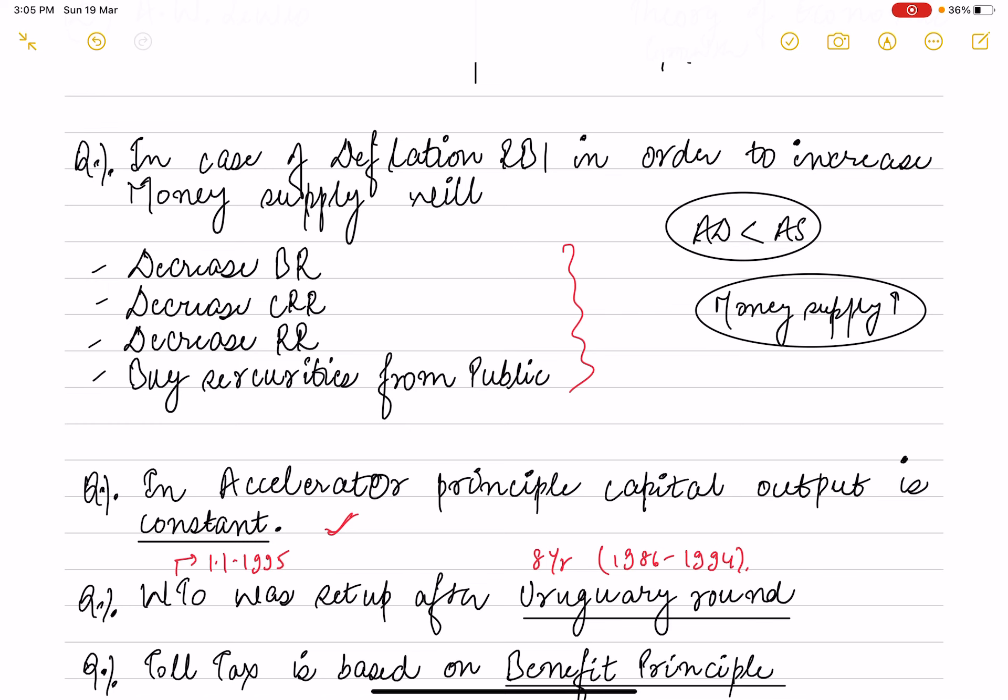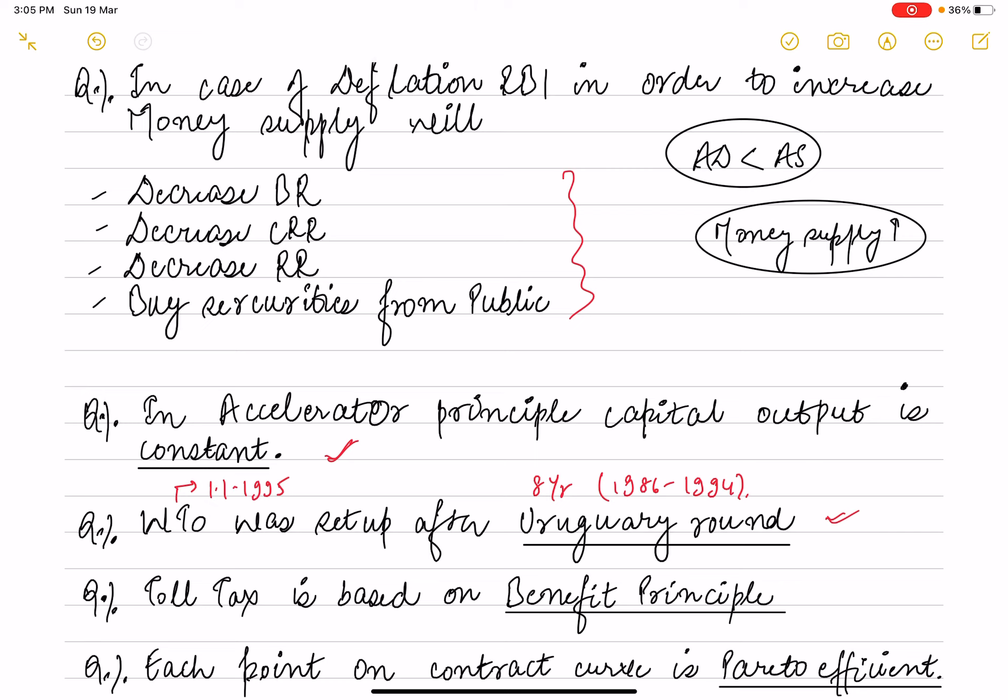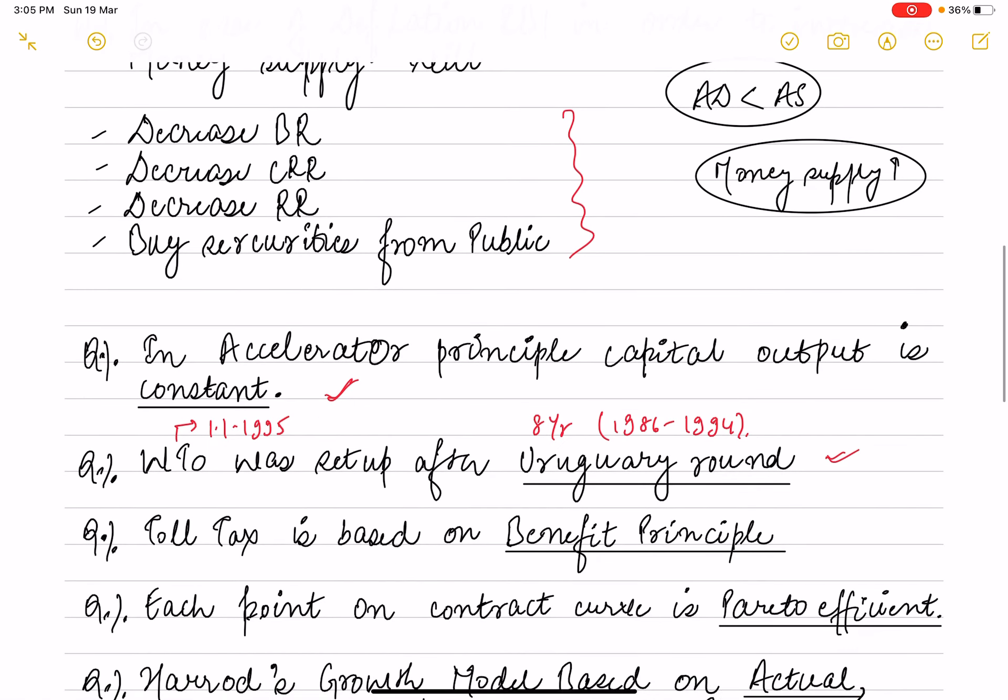Next is toll tax. Toll tax is based on benefit principle - who will use, they will pay tax. That is based on the benefit principle.